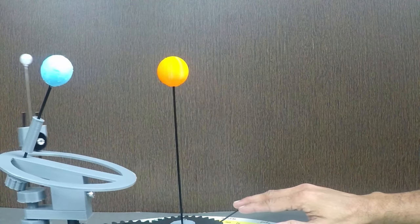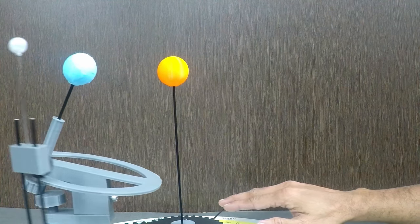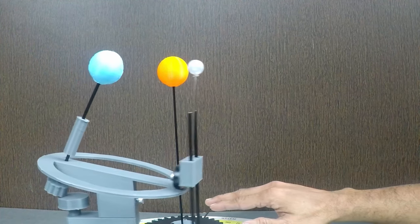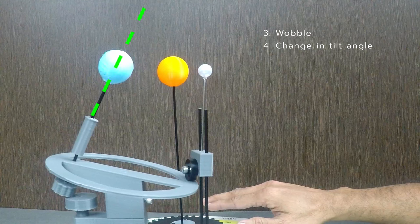Remaining two movements are related to the earth's axis: wobbling and change in the tilt angle of its axis.